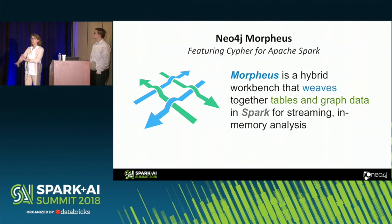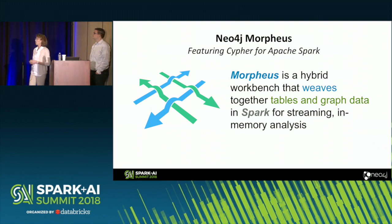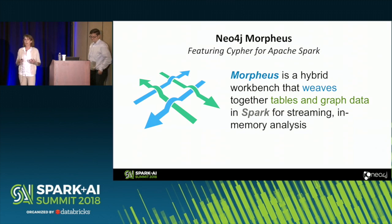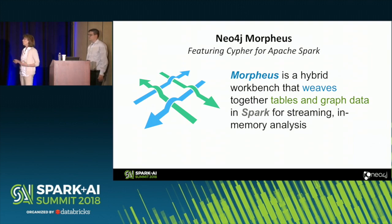What we're here to talk to you about today is a new product called Neo4j Morpheus. Many of you will probably recognize the movie source for that name. Morpheus is a hybrid workbench that weaves together both table and graph data in Spark so you can do your in-memory analysis and wrangling.